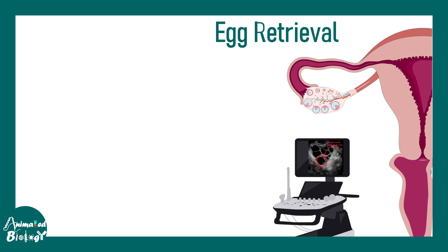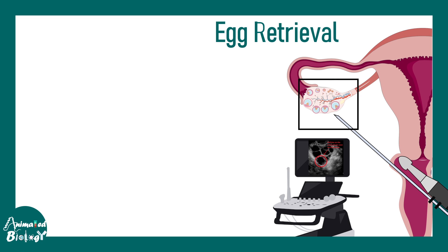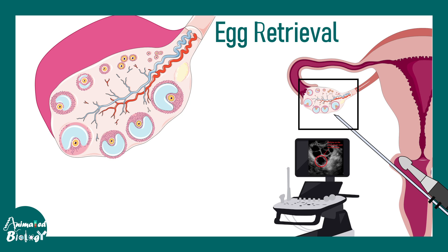Next, the egg is retrieved from the female reproductive tract. A USG-guided probe is inserted into the vagina and a needle is passed through the vagina into the ovary. Looking at the USG monitor, a medical personnel takes out eggs from the ovaries. There are multiple eggs and the oocytes can be removed using an aspiration needle.